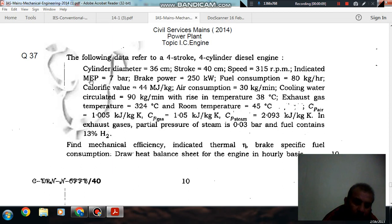The following data refers to a 4-stroke 4-cylinder diesel engine: cylinder diameter 36 cm, stroke 40 cm, speed 315 RPM, indicated mean effective pressure 7 bar, brake power 250 kW, fuel consumption 80 kg per hour, calorific value 44 MJ per kg, air consumption 30 kg per minute.